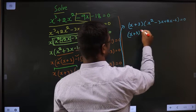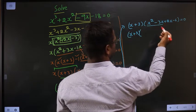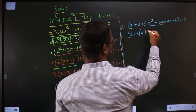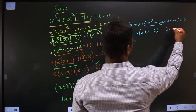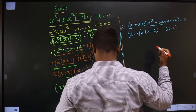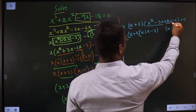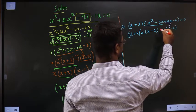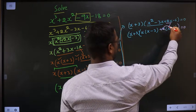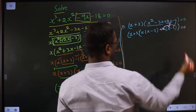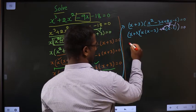Next, x plus 3 times, what can I take common from these two? x, so x minus 3 I get. Here x minus 3 means here also x minus 3. From this x is gone inside means outside is plus 2. In case of doubt, multiply and confirm. You will get the same thing.